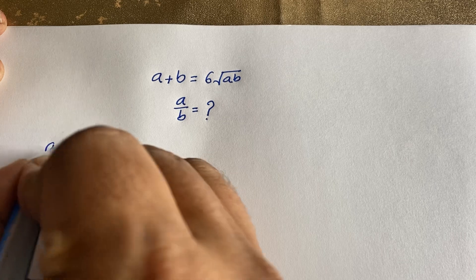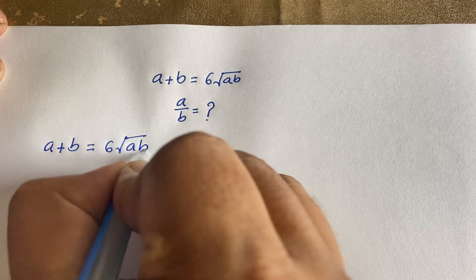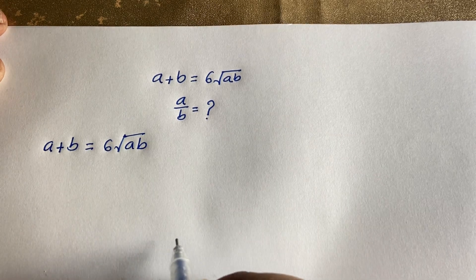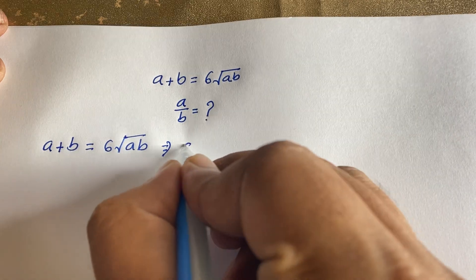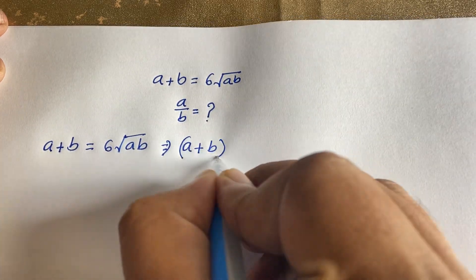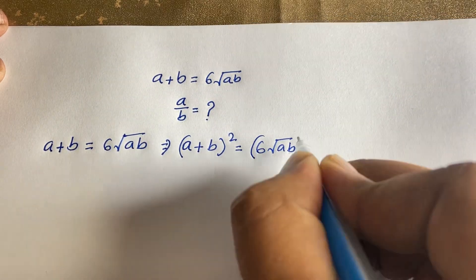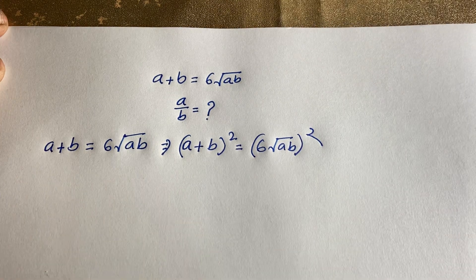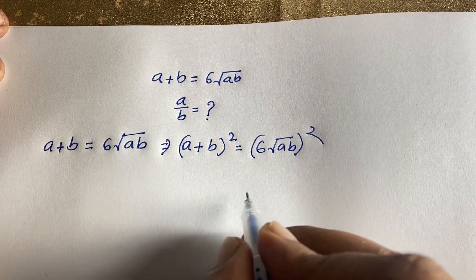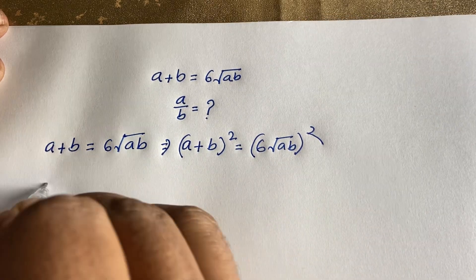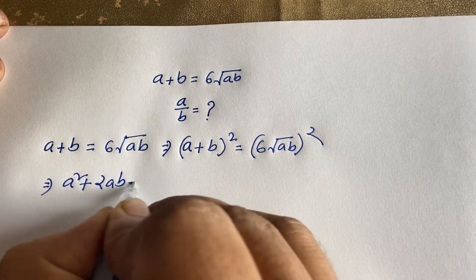Our question is: a plus b is equal to 6 square root of ab. I will square both sides, so this equation becomes (a + b)² is equal to (6√ab)². We know that (a + b)² expands to a² + 2ab + b².